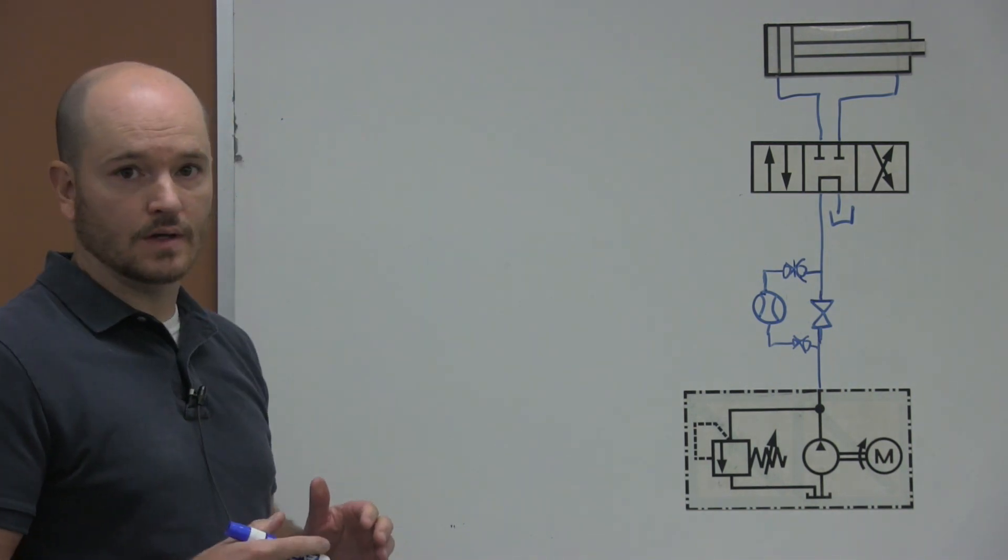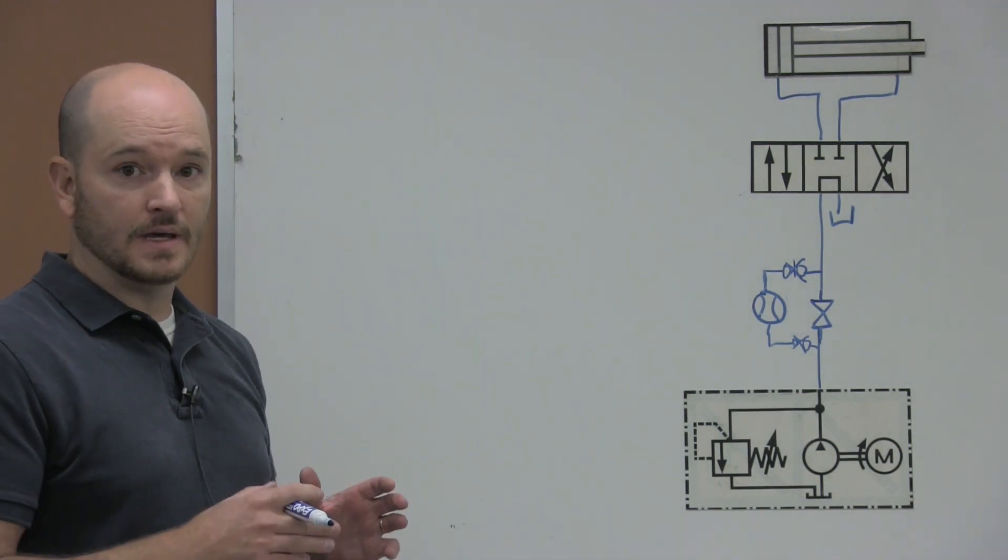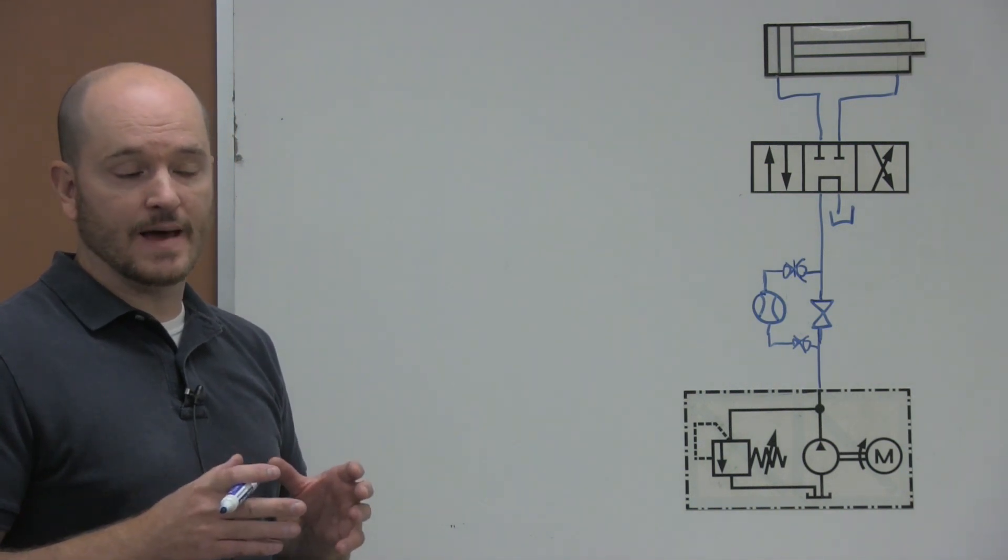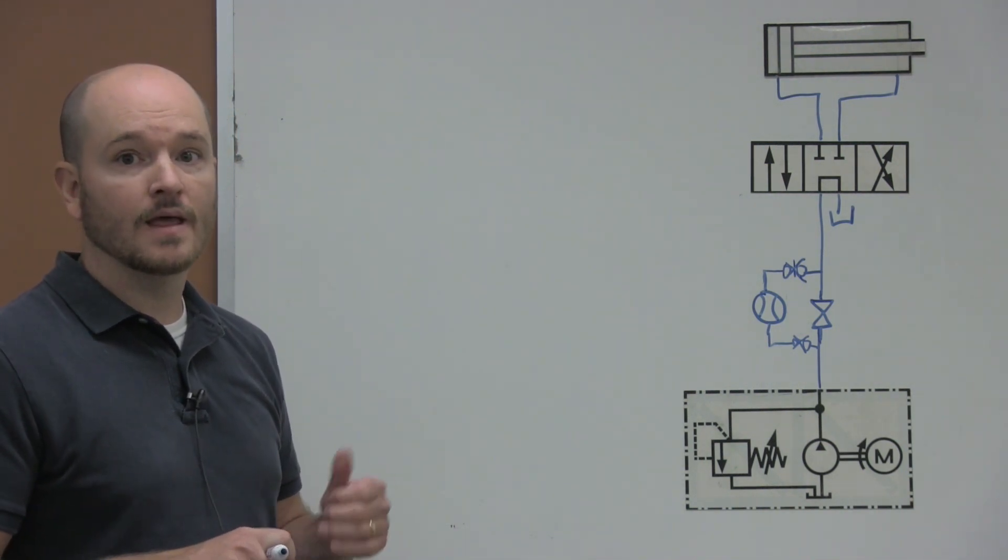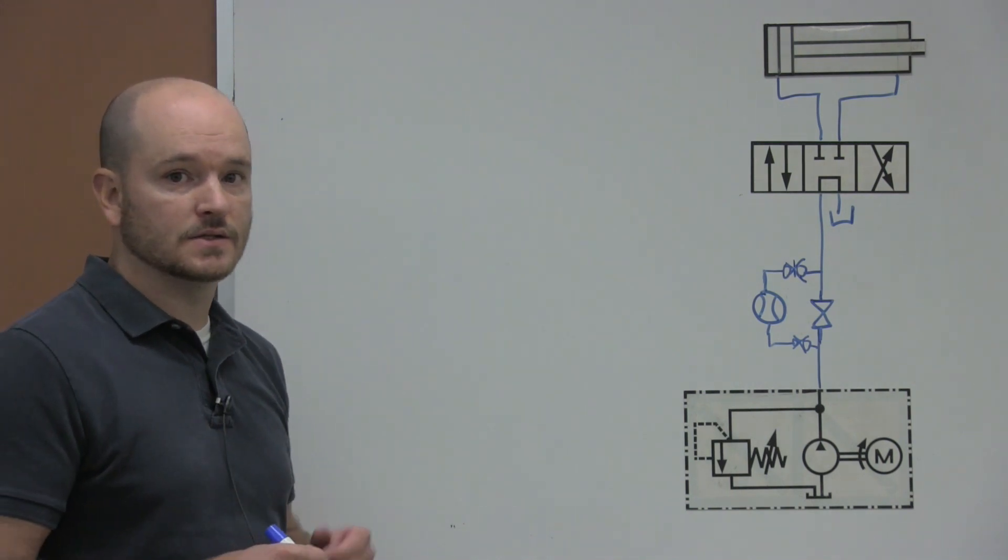In this video, I would like to talk about how to calculate the theoretical gallons per minute that will flow out of a pump at a given RPM, and then how to calculate the efficiency of that pump based on the theoretical calculation and the actual measurement from your flow meter. So let's go ahead and get started.